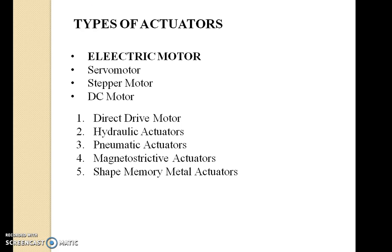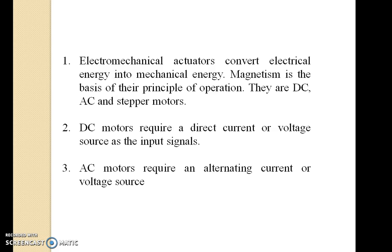There are different types of actuators. Basically in robots they use electric actuators — also called electric motors — that is servo motor, stepper motor, and DC motor. Some other actuators are also available like direct drive motor, hydraulic actuators, pneumatic actuators, magnetostrictive actuators, and shape metal actuators. Electromechanical actuators convert electrical energy into mechanical energy, and magnetism is the basis of their principle of operation. Motors include DC motor, AC motor, and stepper motor. DC motor requires direct current or voltage as input, and AC motor requires alternating current or voltage.